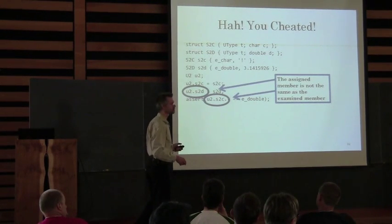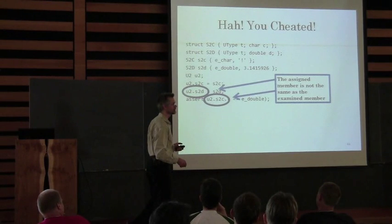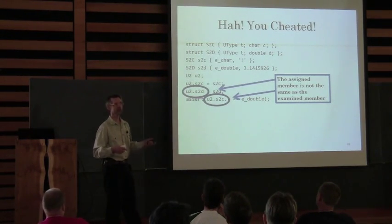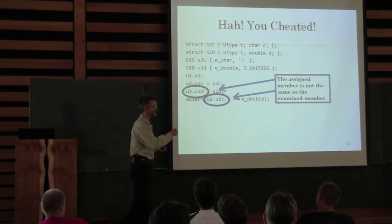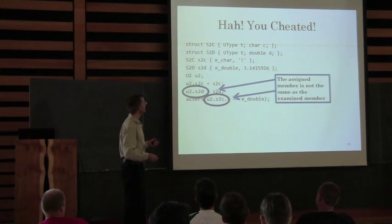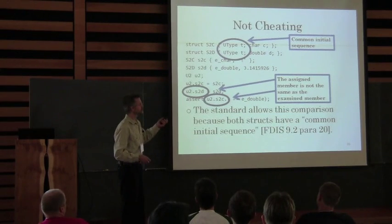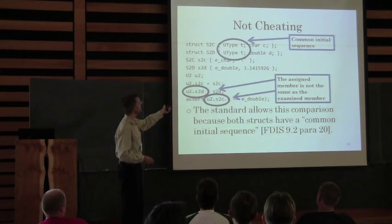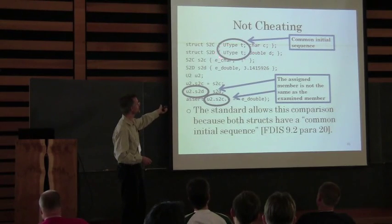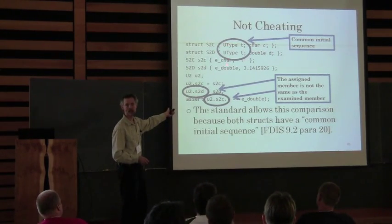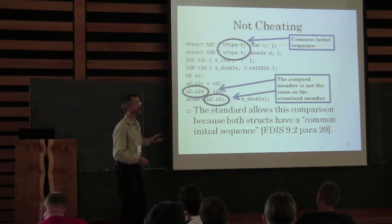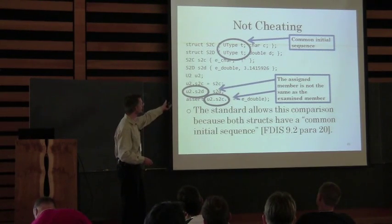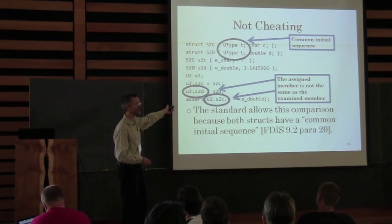When I say 'should,' I mean if you want to avoid undefined behavior. But the standard actually has a cop-out: if the structs you've been messing with have a common initial sequence, then the standard provides you an out. You can look at that first element, or as many elements as are common between the structs. The standard says yeah, we'll let you do that.